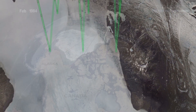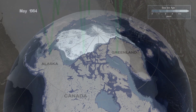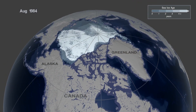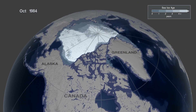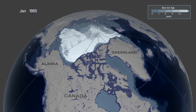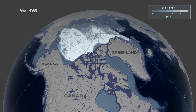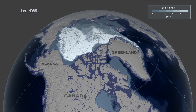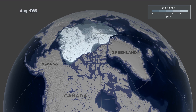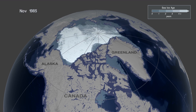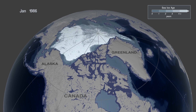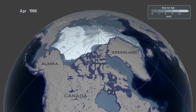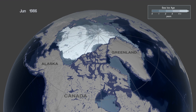In this animation, we're taking Arctic sea ice into the third dimension. Here, we're looking at the ice age, which is an indicator of thickness. Generally, older ice is thicker ice.